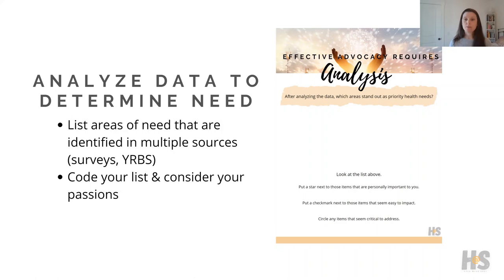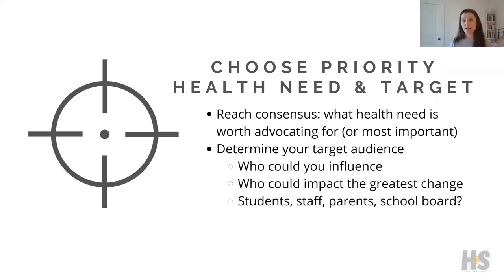Once we've compiled that list, we can code it by putting a star next to items that are personally important, a check mark next to items that have easy fixes — something we can make an easy change with — and circling any items of critical importance. By doing so, we'll be able to see visually which topics or issues really are priority health needs.